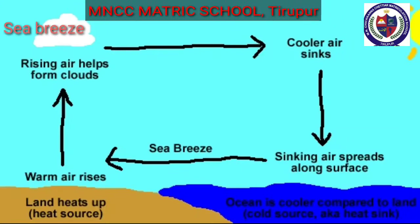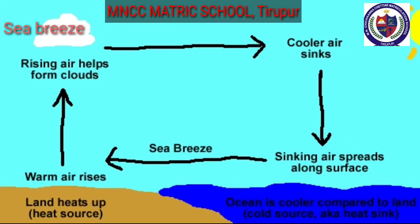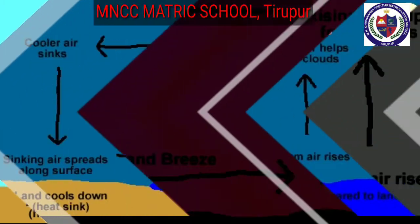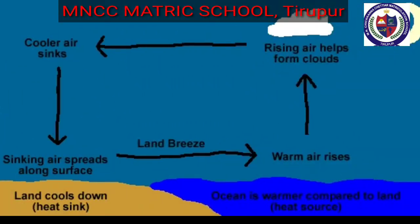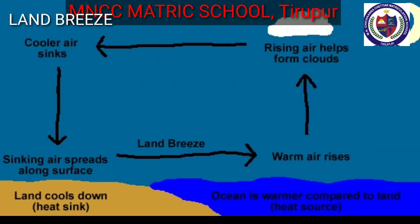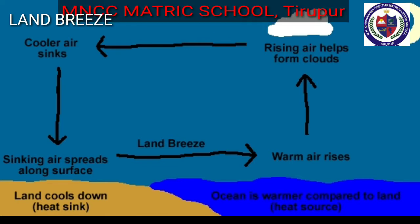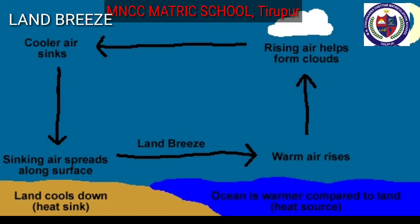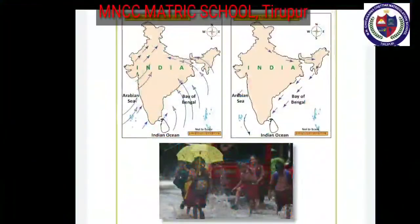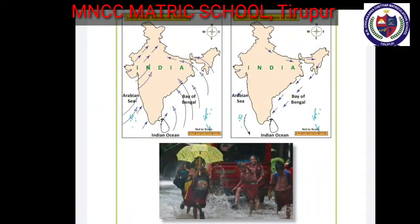Sea breeze blows from sea to land during the evening. Land breeze blows from land to sea in the morning. Local wind affects the weather — warm local wind occurs in northwest India, and cool local wind occurs in northeast India.